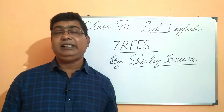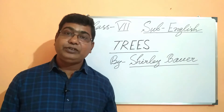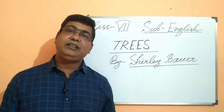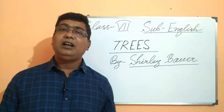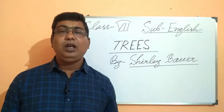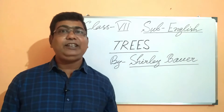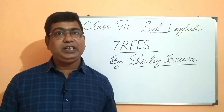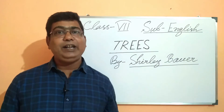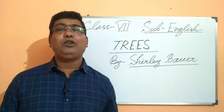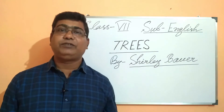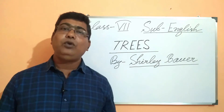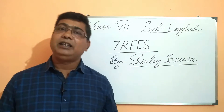Trees are to have tea parties under. Trees are also useful for arranging tea parties. A tea party is a social gathering when some people sit together to have tea, snacks, etc., especially in the afternoon. People sit there because they get the cool shade of the trees. Therefore, trees are useful for those who arrange a tea party among themselves.